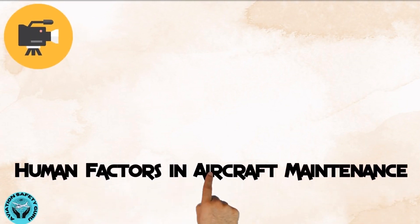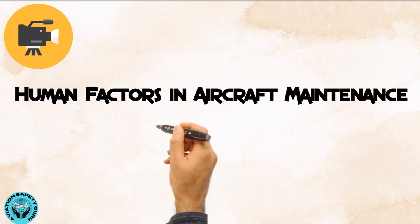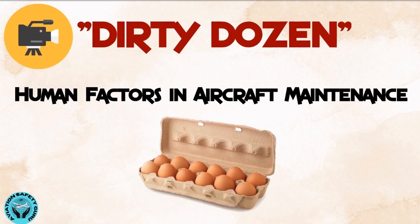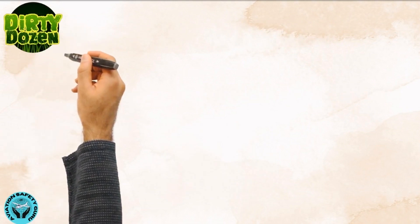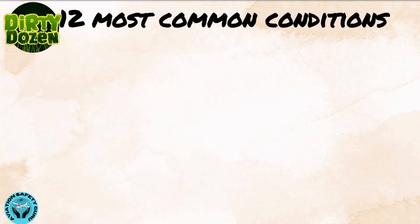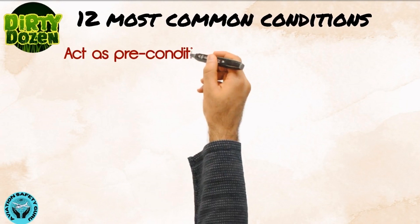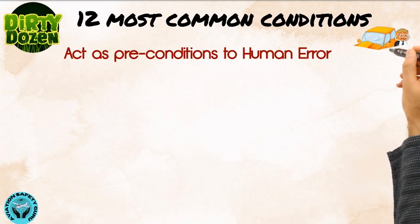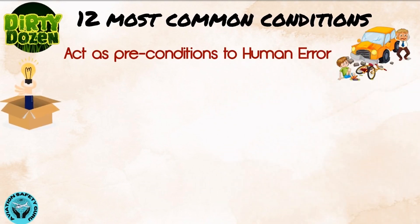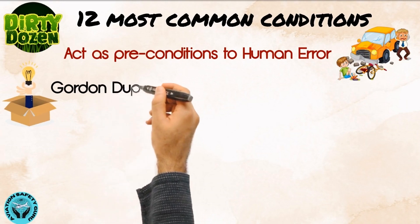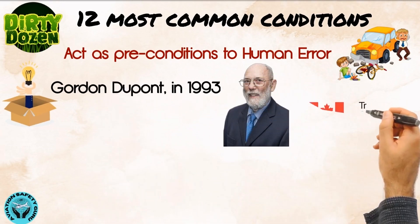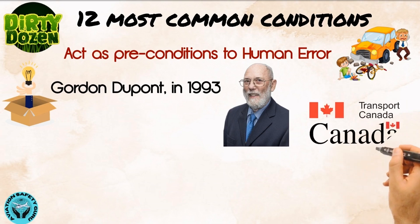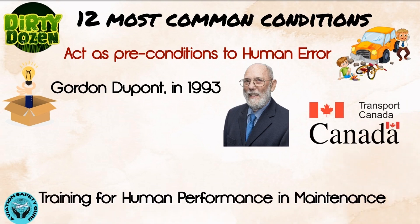In this video, we will talk about human factors in aircraft maintenance, famously known as the Dirty Dozen. The Dirty Dozen refers to the 12 most common conditions that can act as preconditions to human error, leading to accidents. This concept was developed by Gordon DuPont in 1993 at Transport Canada, and it formed part of training for human performance in maintenance.